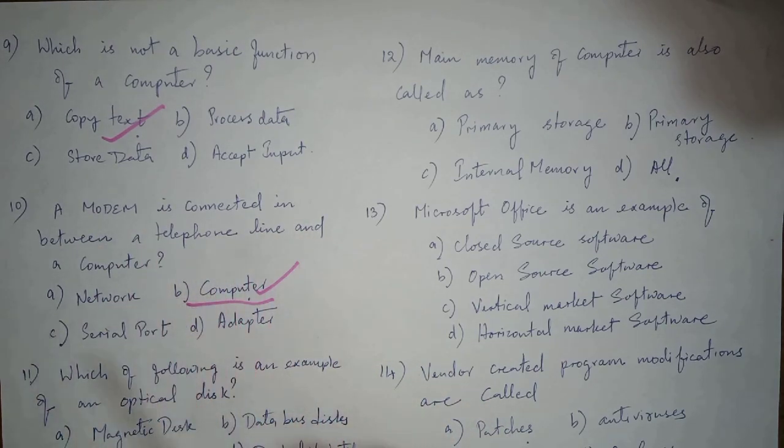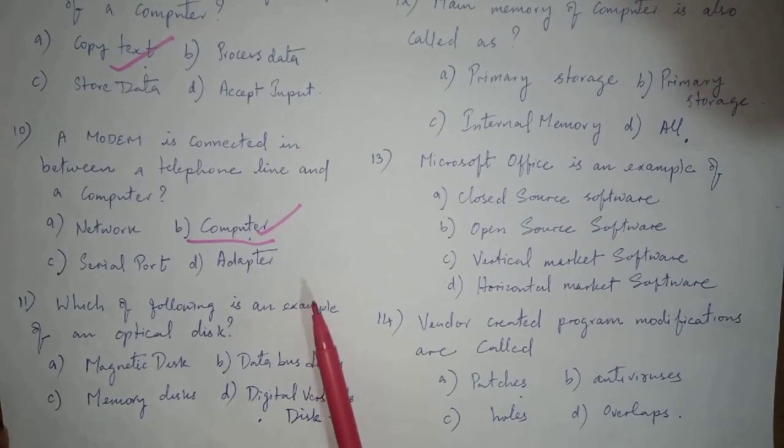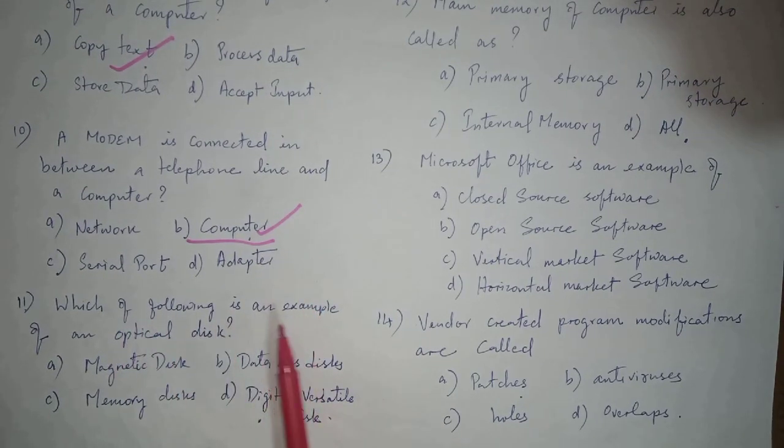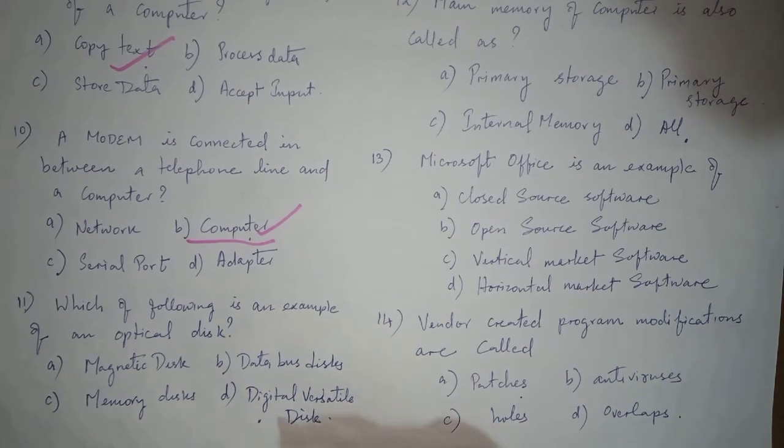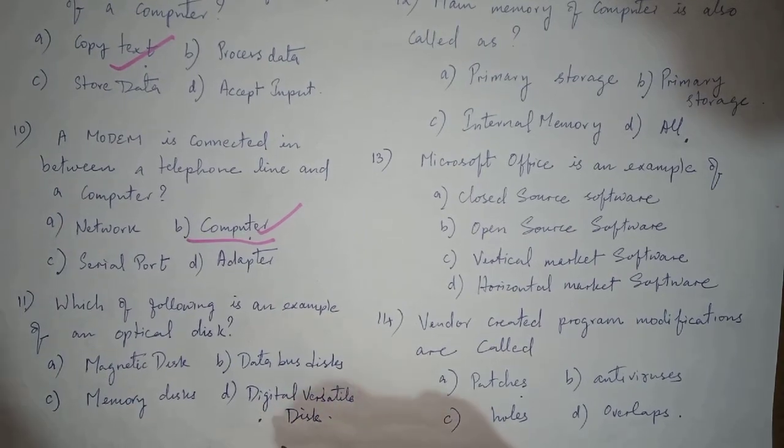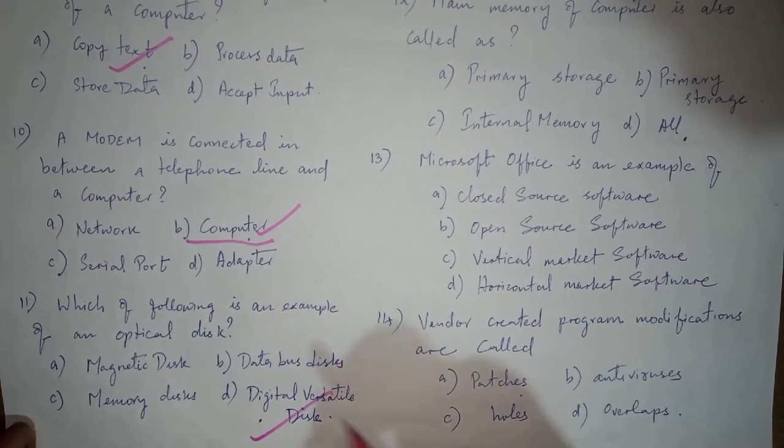Next question is: which of the following is an example of an optical disk? The options are magnetic disk, data bus disk, memory disk, and digital versatile disk. And the answer is digital versatile disk, which is option D.